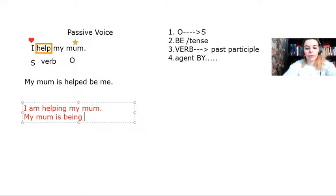So, it's is being. So, my mom is being. Next thing I have to do is use the past participle of the verb helped and then the agent by me. That's all.